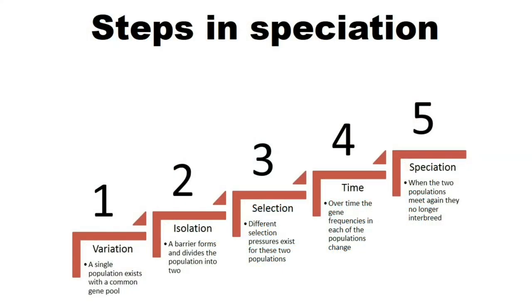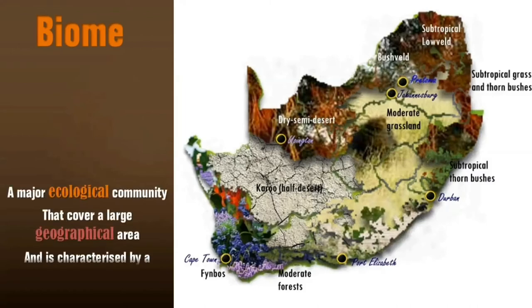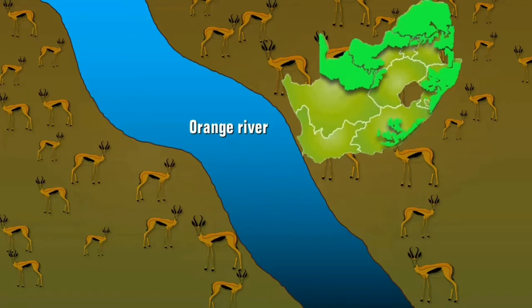Various steps need to be followed before a species becomes unique. It needs variation, isolation, selection, and a long time to take place. The Springbok inhabits the dry areas of south and southwest Africa. In the far north, the subspecies Antidorcas marsupialis angolensis is confined to the Namib desert in Angola. North of the Orange River lies the savannah biome. It stretches from the Kalahari in the northwest to the lowveld in the northeast and southwards to the low-lying areas of KwaZulu-Natal and the Eastern Cape, but the eastern border of Gauteng province is as far as the Springbok will be found.